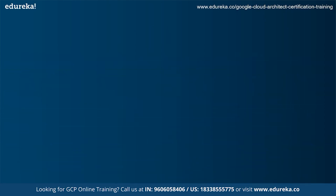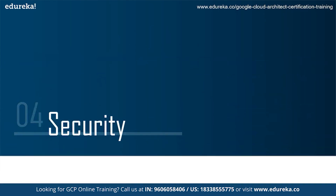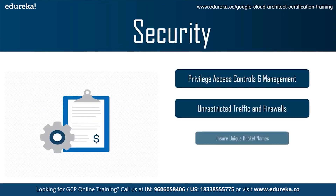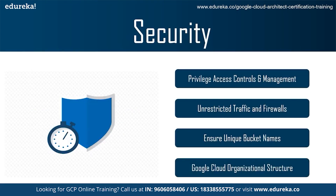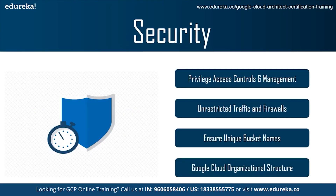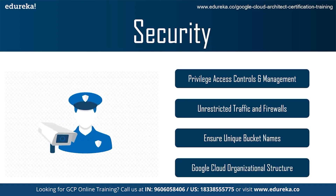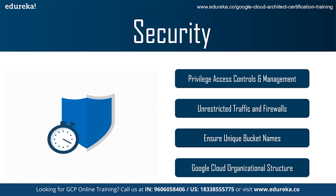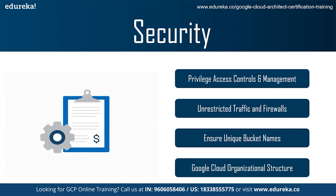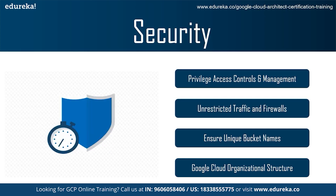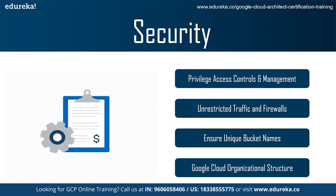Moving on to the next category: security. The first best practice is to apply least privilege access controls via Identity and Access Management. The principle of least privilege is a critical foundation element in GCP security — it is the concept of only providing employees with access to applications and resources they need to properly do their jobs.